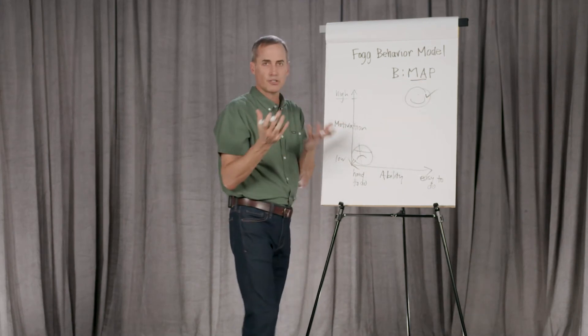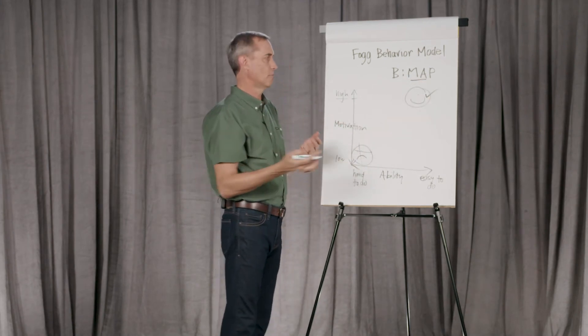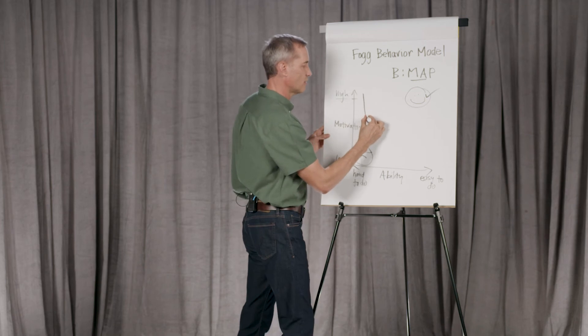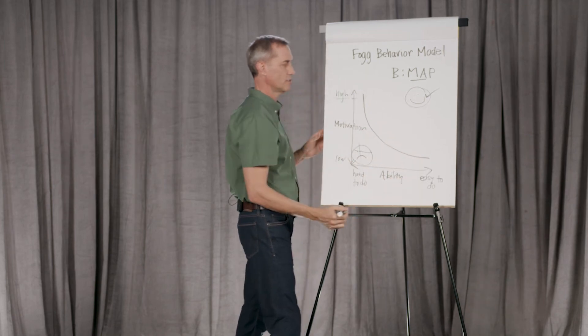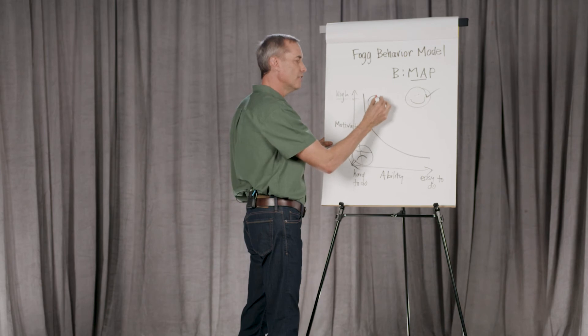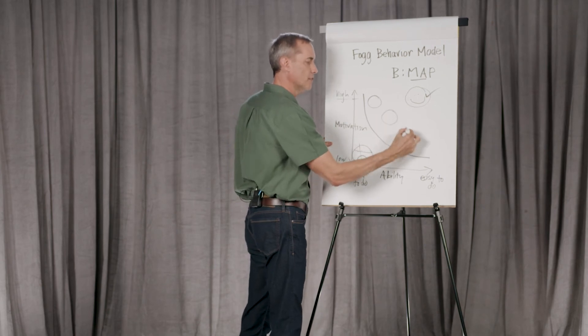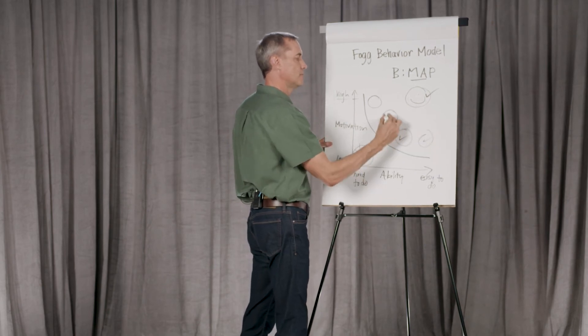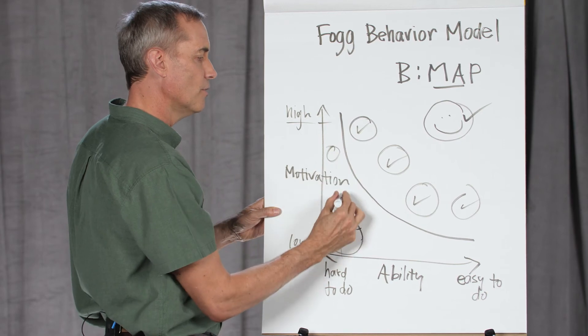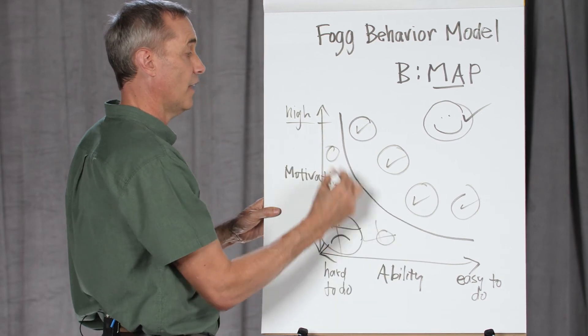Now, there's a trade-off or substitution relationship between motivation and ability. This curved line shows that relationship. If somebody is anywhere above this line when prompted, they do the behavior. If they're anywhere below the line when prompted, they don't.